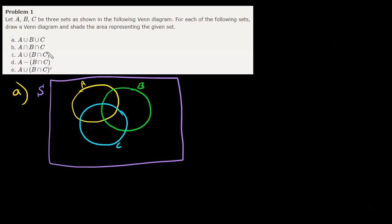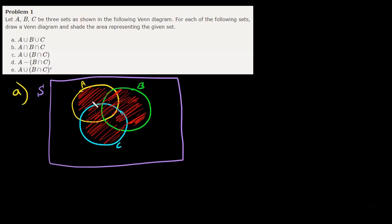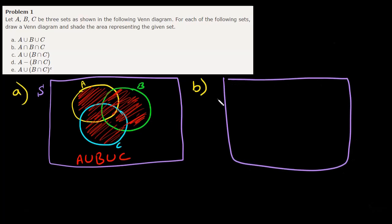What does union mean? Union means you belong to A or B or C. So if you belong to any of these three events then you belong to the union. The way we draw this in our Venn diagram is we just shade everything. That's what union means — it's the event A or the event B or the event C. In red I have the union between A, B, and C.